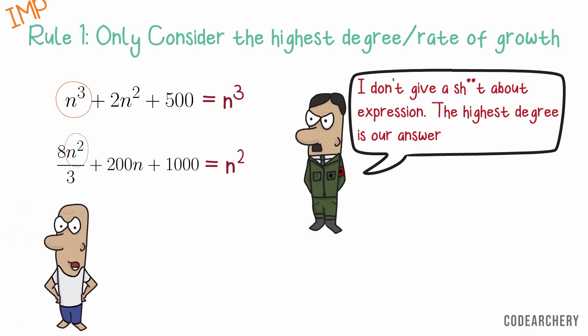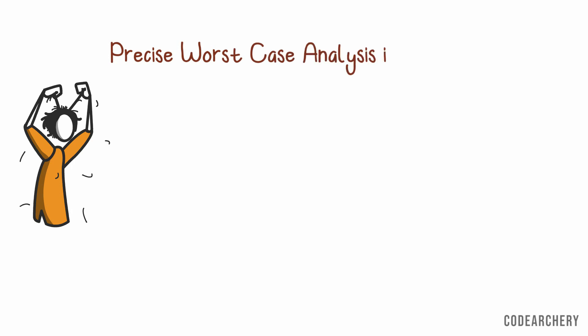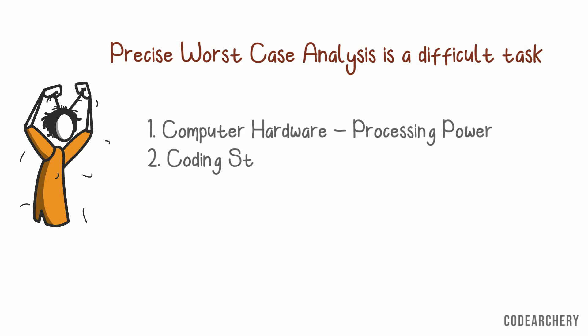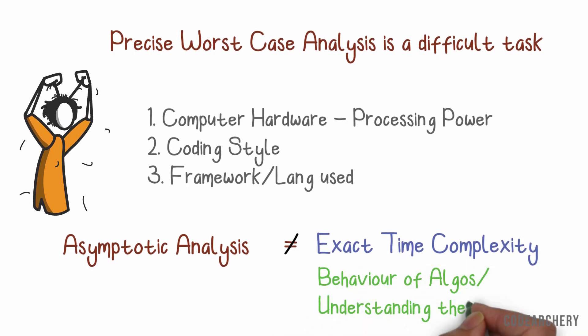So you might yell at me saying that this analysis is completely wrong. It doesn't give us the right answer. And now you should ask me why? Why do we do such analysis? And the answer is, performing a precise worst case analysis is a very difficult task. Because running time depends on various factors such as processing power, the way in which code is written or language used. So asymptotic analysis is not about finding the exact time complexity. It's about finding the behavior of algorithms.